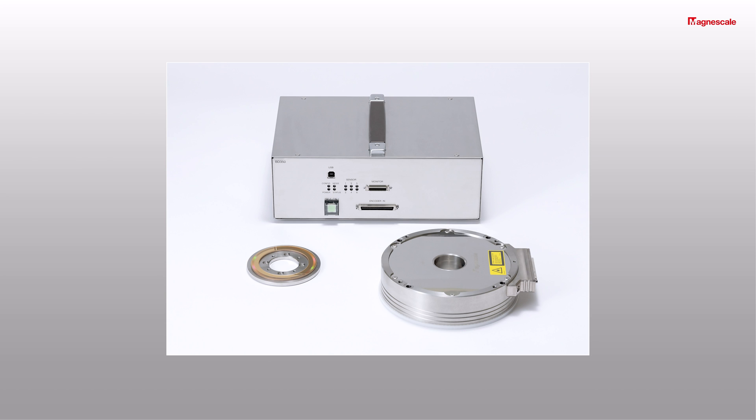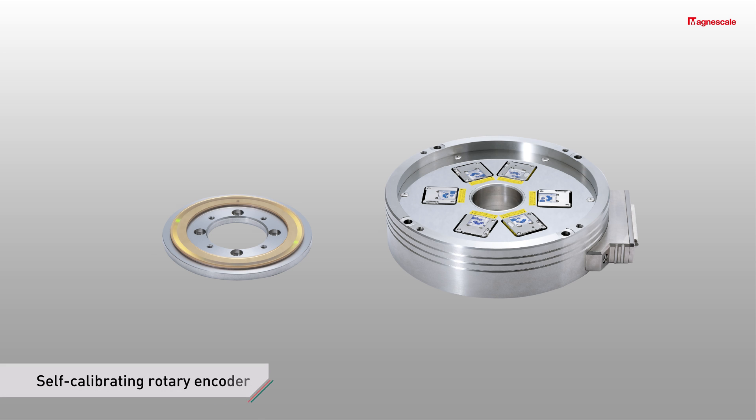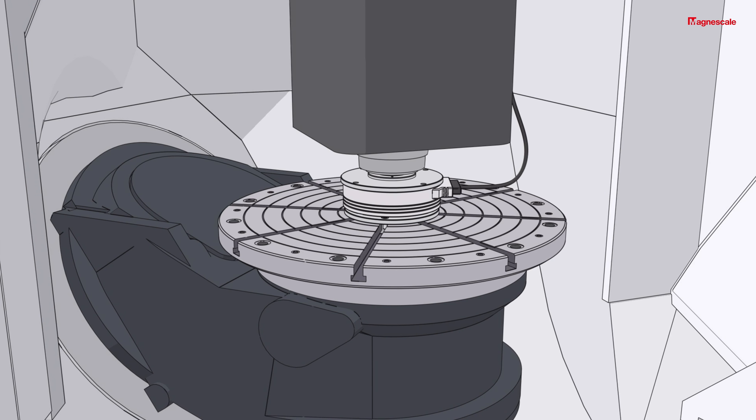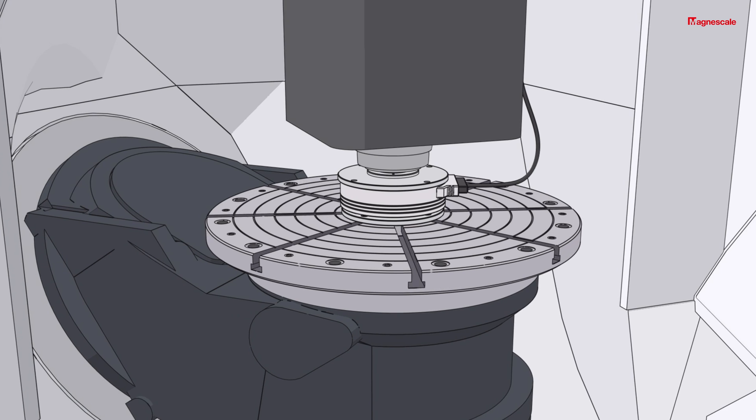Magnescale has developed the self-calibrating rotary encoder Set HD100 to resolve this issue. This solution allows easy and accurate measurement of the machine's indexing accuracy.